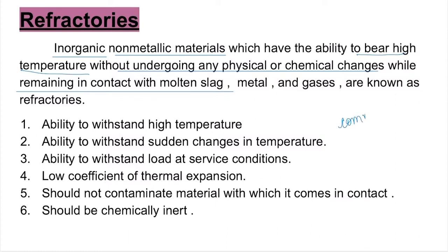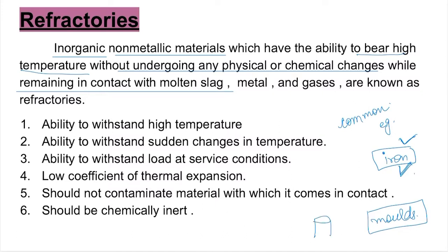To give a common language example: there are many businesses that work with iron and steel, and they use moulds — just like we use stencils in art and craft. Liquid iron and liquid steel are poured into cylindrical moulds to give them a solid shape. These moulds are made of refractory materials, which bear high temperature without undergoing any physical or chemical change while remaining in contact with molten slag, metal and gases.